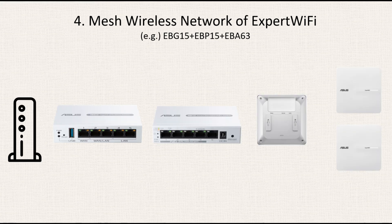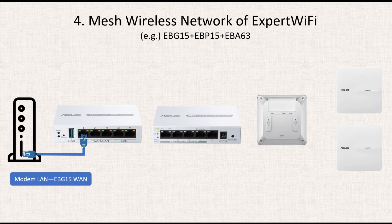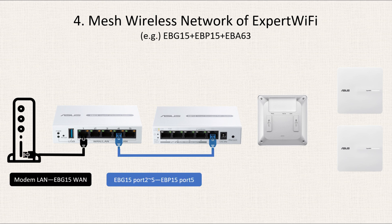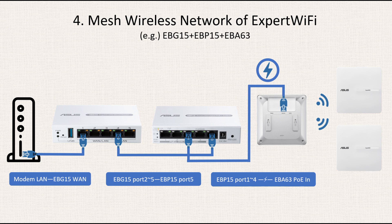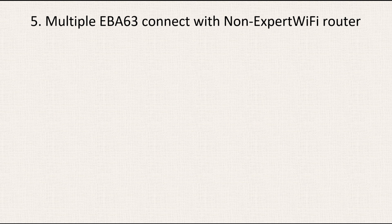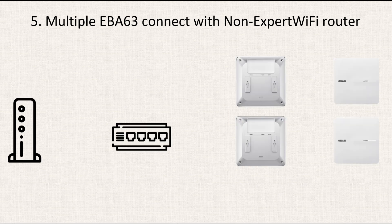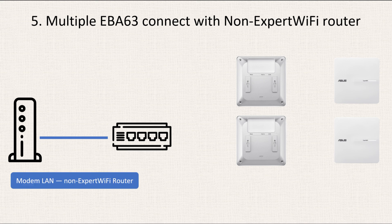Number four: the configuration of a mesh wireless network, involving EBG15, EBP15, and three EBA63 units. First, connect the modem's LAN to the WAN of EBG15. Second, connect either of LAN ports 2 to 5 of EBG15 to port 5 of EBP15. Third, establish another connection by linking either of PoE+ ports 1 to 4 of EBP15 to the PoE input of EBA63. Fourth, add two more EBA63 units for a wireless mesh system connection.